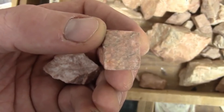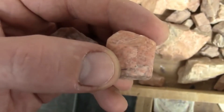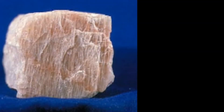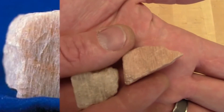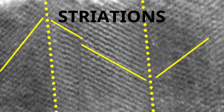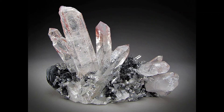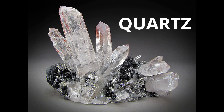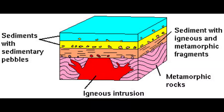Each feldspar is made up of stacks of thin crystals with their molecules arranged in opposite directions. This causes the cleavage planes to have fine parallel lines across them, called striations. Quartz, on the other hand, is the second most abundant mineral in earth's crust after feldspar, and it occurs in nearly all acid igneous, metamorphic, and sedimentary rocks.